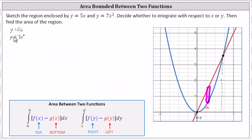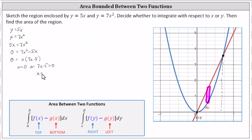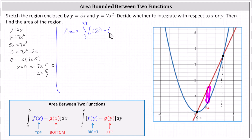Let's solve the system for x by performing substitution. Substituting 5x for y in the second equation gives us 5x equals 7x squared. Setting the left side equal to zero and solving by factoring, the right side equals zero when x equals zero, or when 7x minus 5 equals zero, meaning x equals five sevenths. So the limits of integration with respect to x are from zero to five sevenths, giving us the integral from zero to five sevenths of the top function, f of x equals 5x, minus the bottom function, g of x equals 7x squared.